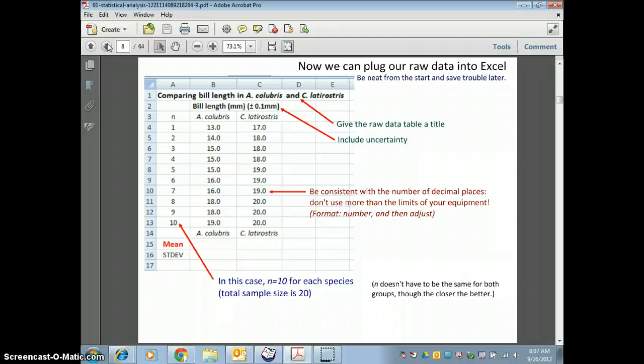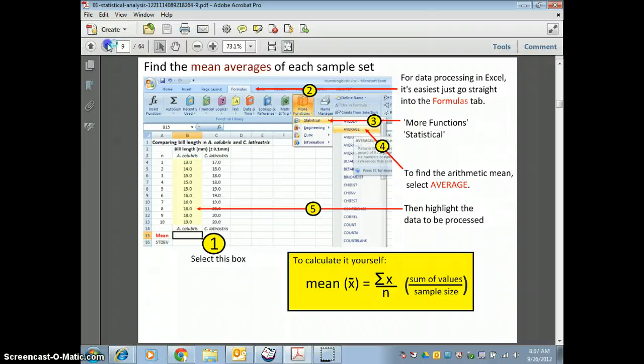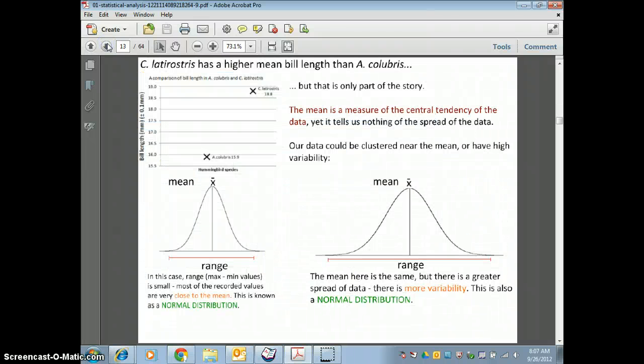We will not be doing Excel on the test, but remember, you do need to know how to do all of this for your IAs. So I'm just going to click through this. When you're looking at it graphically, same thing here. When you calculate the mean, on a normal distribution curve, that's the X with the line over it.